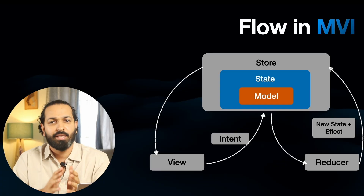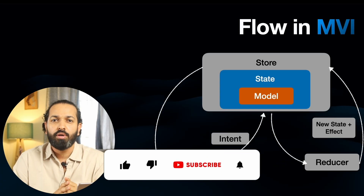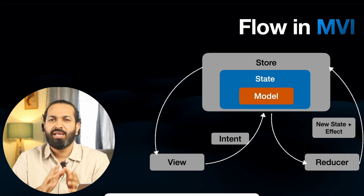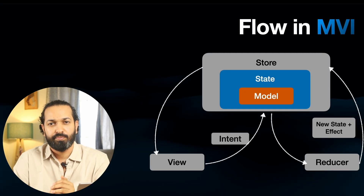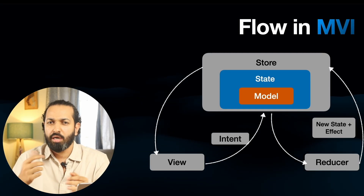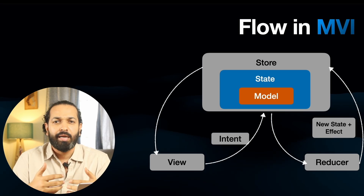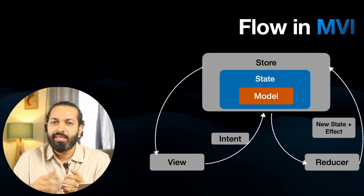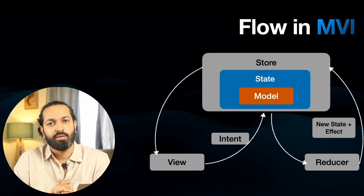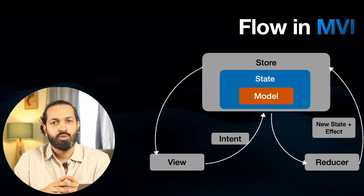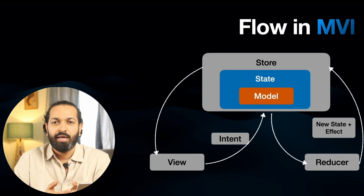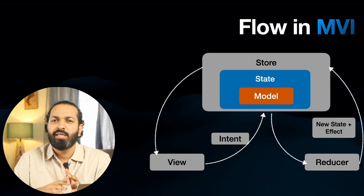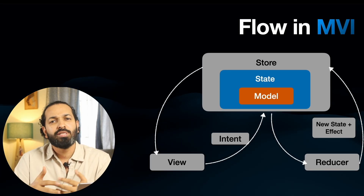I hope that at least theoretically this is clear now. For translating this to code, we'll see an extremely simple example — a counter application. It will have a screen that shows a count, some buttons for incrementing, decrementing and resetting the count, and we'll also add a button to increment the count with some delay. I'm adding this delay button on purpose to show how effects work. We'll see how the intent flows through the store, how the reducer updates the state, and how the view just renders it. It's clean and very predictable.